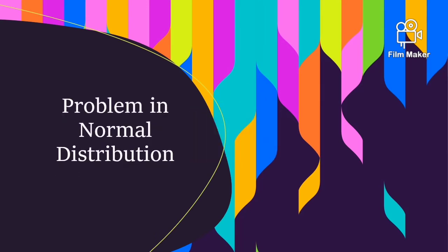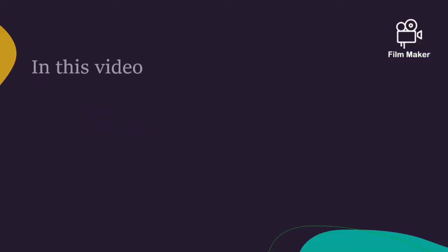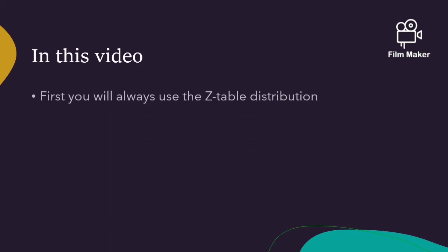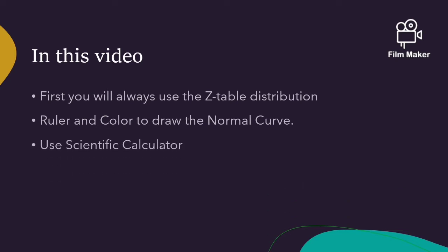Problem in Normal Distribution: Z is equal to the average mean minus the probability mean divided by the standard deviation. In this video, you will first always use the Z-table distribution on how to shape going to the right and going to the left — the higher and the lower. You will use the ruler and color to draw the normal curve, and lastly, the scientific label.